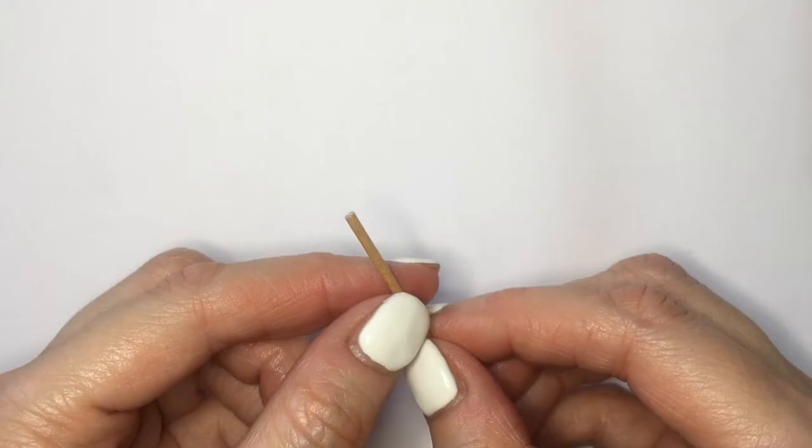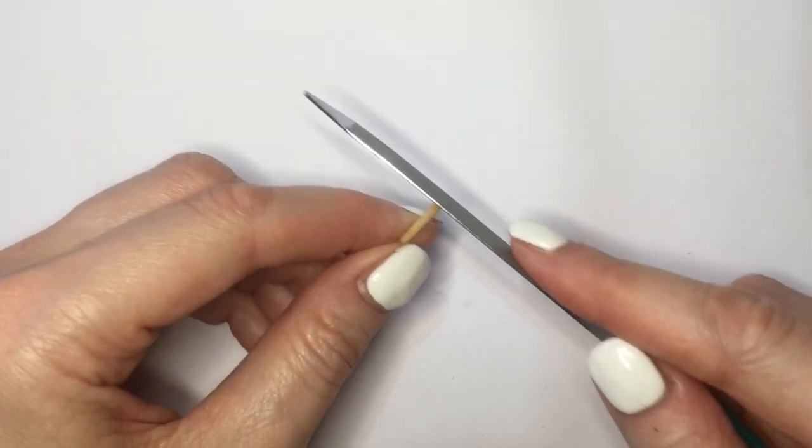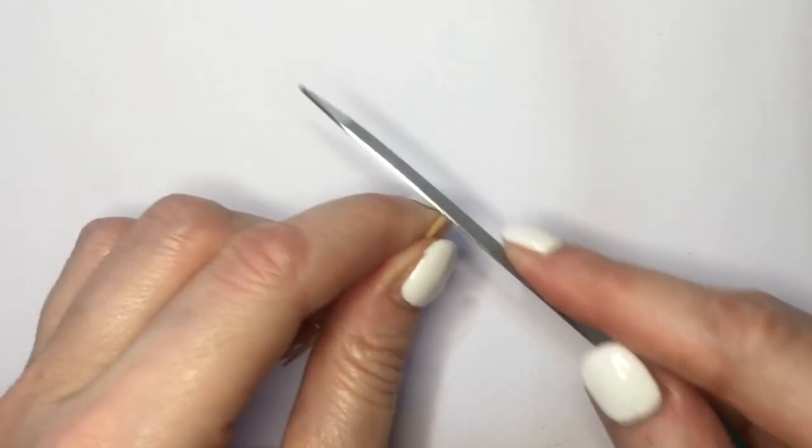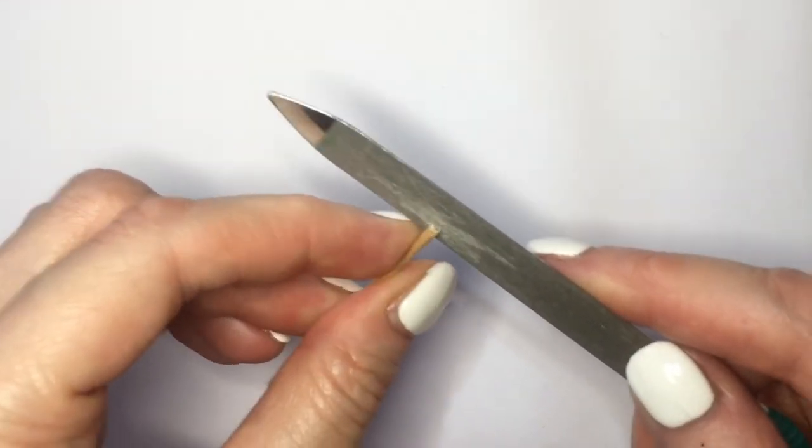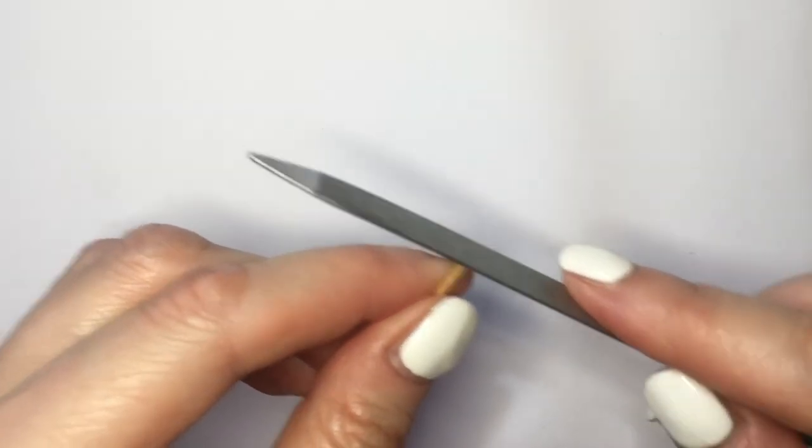And then once it's cut, I'm going to be taking a nail file to give it smoother edges and make this perfectly round. Once I have the shape that I like, I'm going to be placing this in, and this is the size of dots that you get with this.